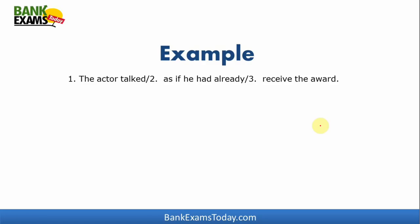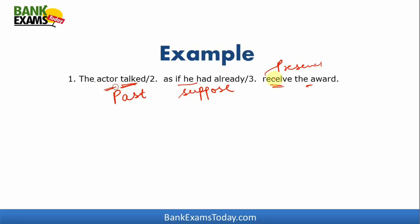Now: "The actor talked as if he had already received the award." 'The actor talked' is past tense. 'As if he had already' — we are supposing something, which is why 'had' is used. Then 'receive the award' — 'receive' is in the present form, which is an error since the sentence starts in the past. It should be 'received': "The actor talked as if he had already received the award."